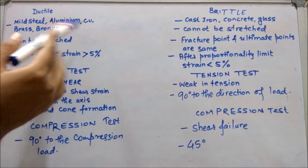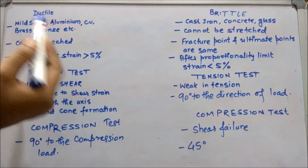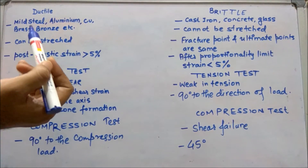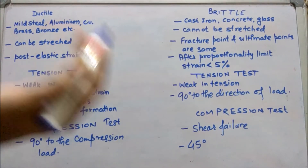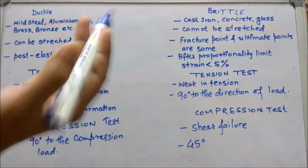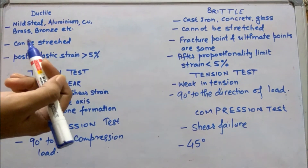Ductile materials include mild steel, aluminium, copper, brass, bronze, manganese, lead, nickel, and brass etc.